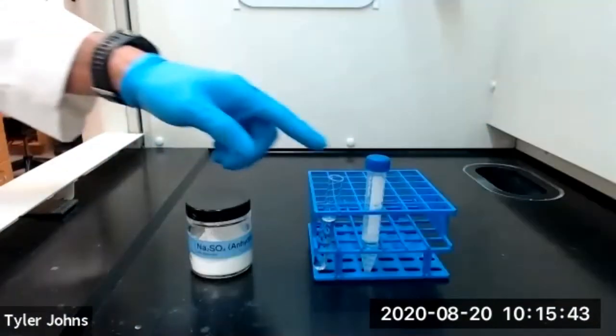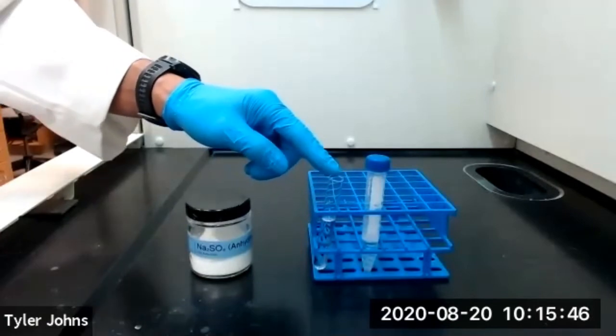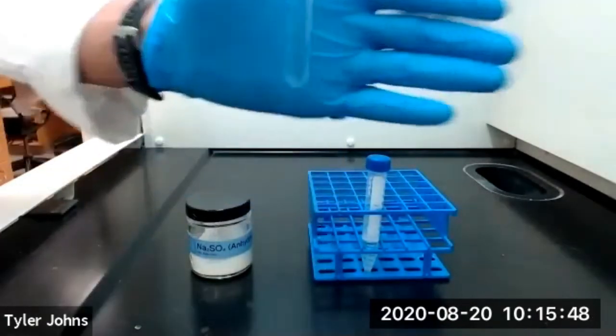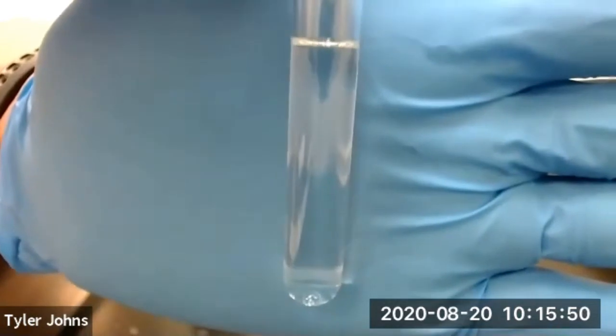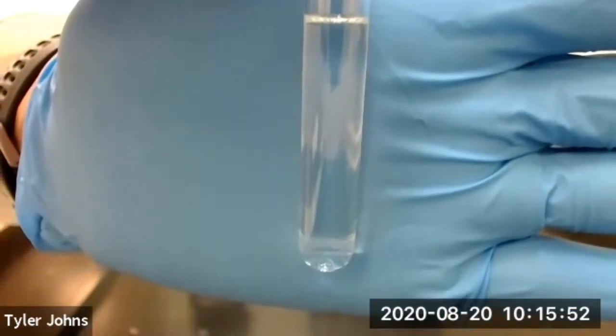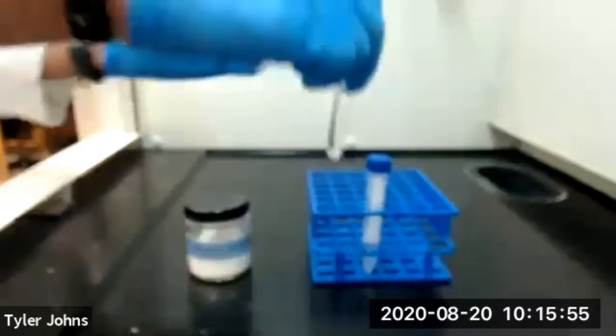We've collected our three two-milliliter extractions of methylene chloride in a test tube. You can see now that we just have one layer, which is our organic layer of methylene chloride in our test tube.